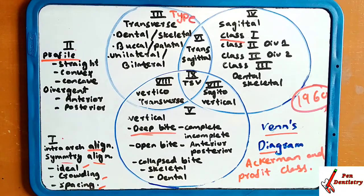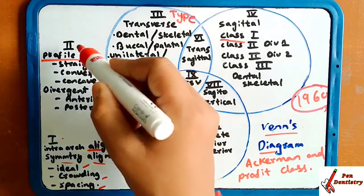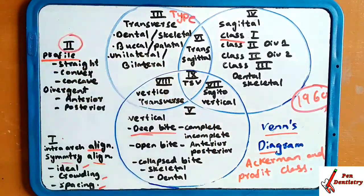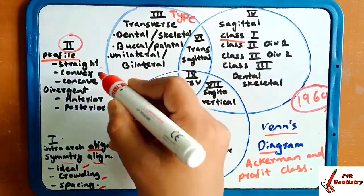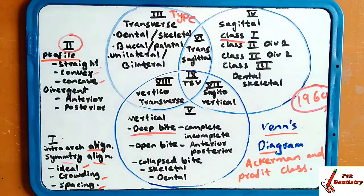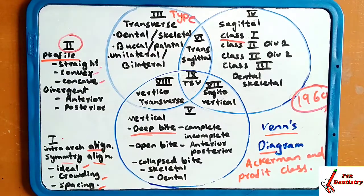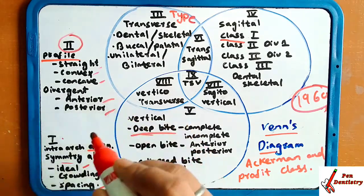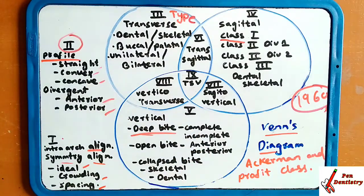In group two, he has said about the profile. He considered the profile in group two — whether the face of the person is straight, convex, or concave, and whether there is anterior divergence or posterior divergence present. He described the profile in the second group.